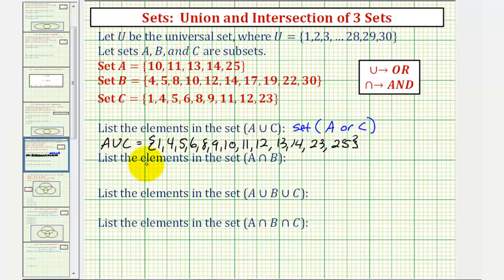Next we want to list the elements in A intersect B, or the elements in the intersection of A and B, where intersection means AND. So we can think of this as a set of elements that would be in A and also in B. So looking at sets A and B, we're looking for the elements that they have in common or the elements that are in both sets. Notice how they both contain the element ten as well as the element fourteen. So the elements in A intersect B would be ten and fourteen.